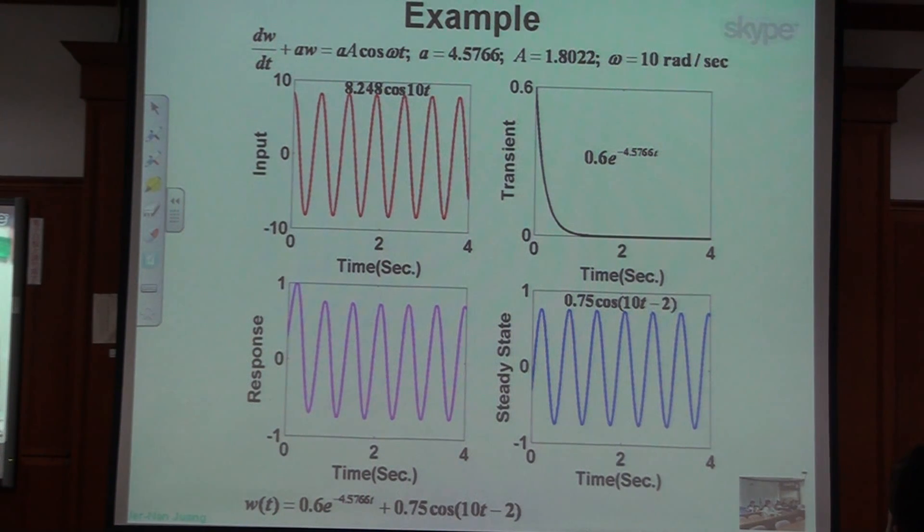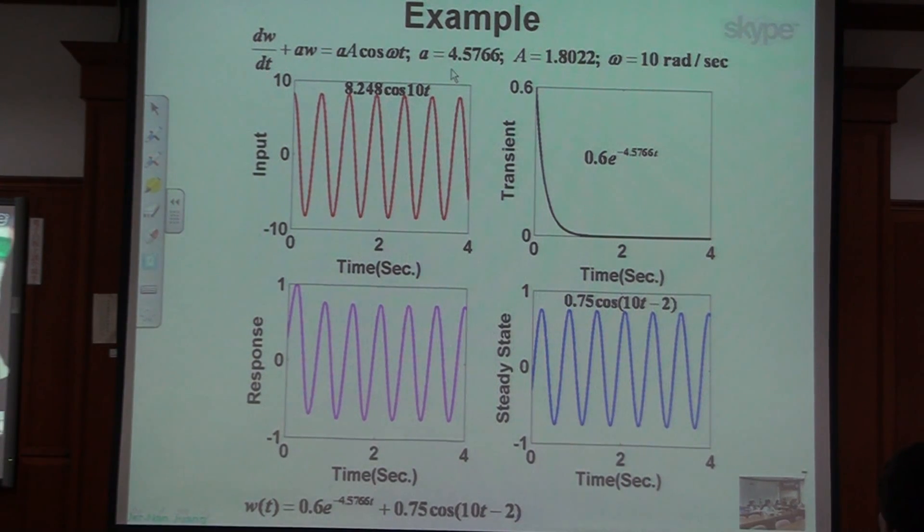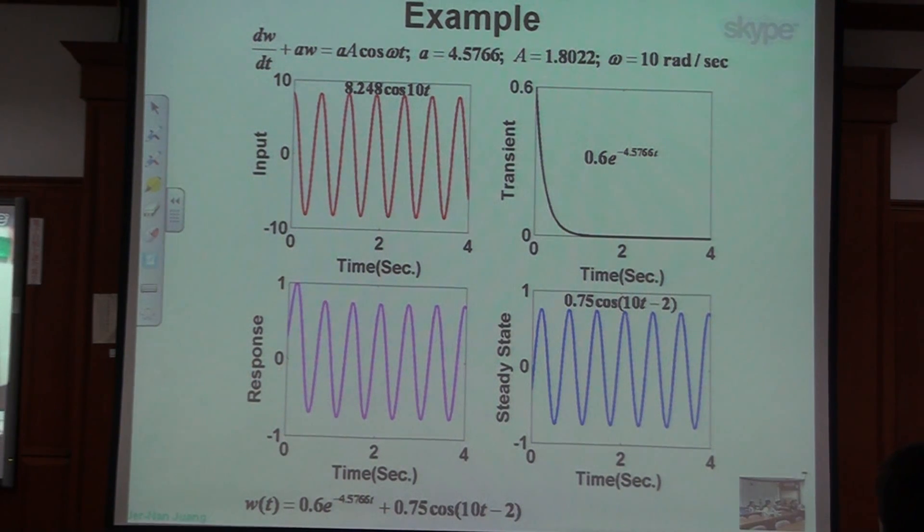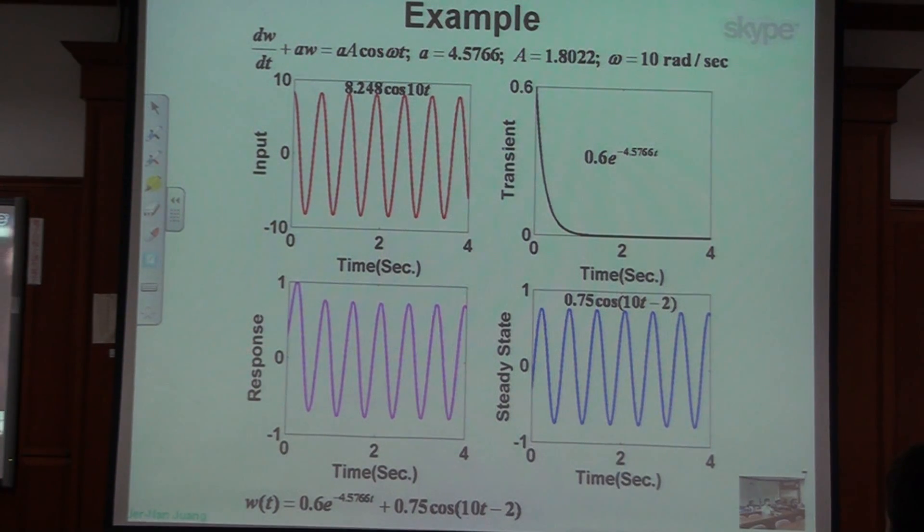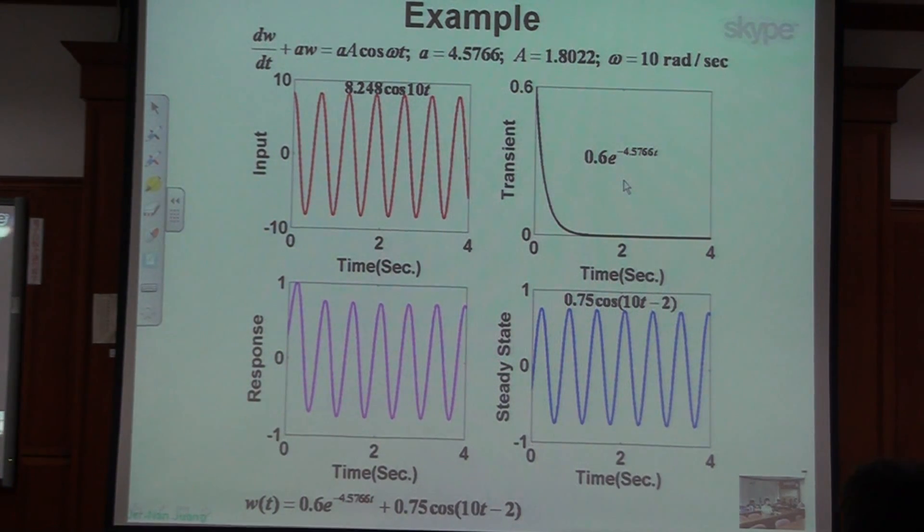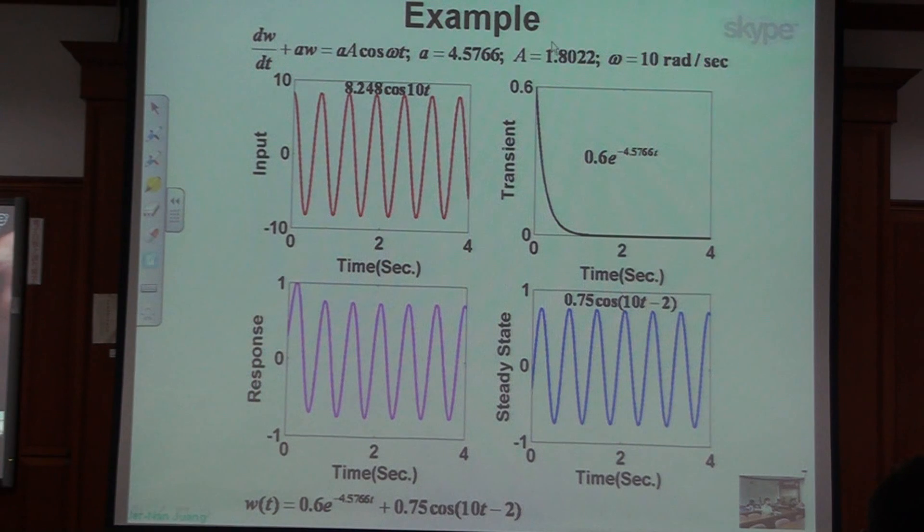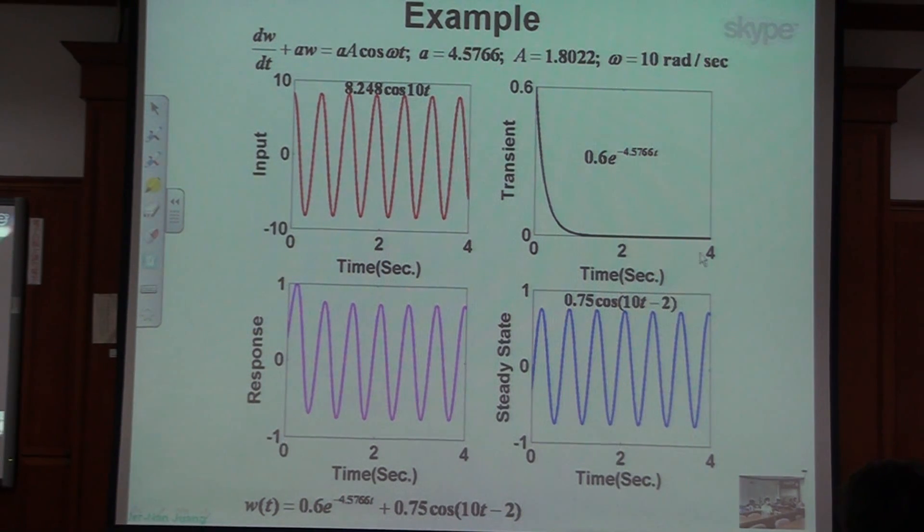And I have a equal to 4.5766. Omega equal to 10 rad/sec. In small a, that's the 4.5766. My input is 8.248 cosine 10t. That's my input. That's my input is 10 rad/sec per second. That's my input. And you will be able to see that my transient is this. It's 0.6 exponential minus 4.5766t. That means it initially is 0.6 and coming down and decaying quickly.